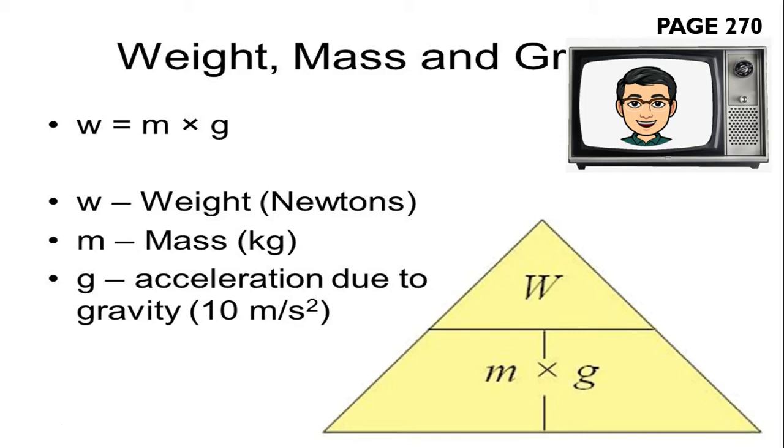The gravitational field strength on Earth is about 10 newtons per kilogram. This means that a mass of one kilogram has a weight of 10 newtons. If your mass is 40 kilograms, multiply 40 kilograms times 10 newtons per kilogram. Your answer should be 400 newtons—your weight is 400 newtons.